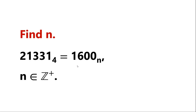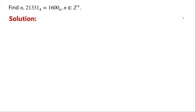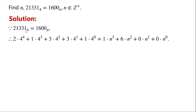Solve this equation. n is a positive integer. 2, 1, 3, 3, 1 in base 4 equals 1, 6, 0, 0 in base n. 1 in base 4 here means 1 times 4 to the power of 0.